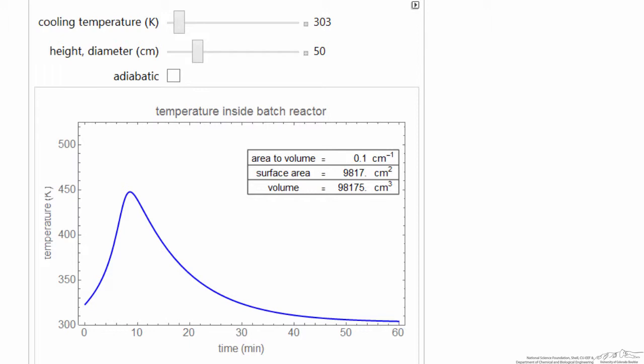Here's the simulation on the Wolfram site, and you see we're plotting temperature versus time. We're also indicating the area to volume ratio, the surface area, and the volume. If I go to a very small reactor, then the temperature drops down to close to the cooling temperature, not much reaction takes place.